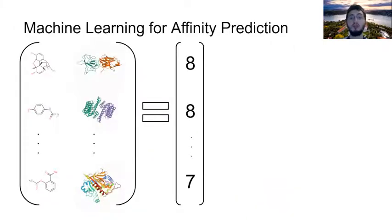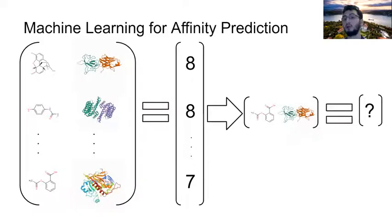More specifically, we can use machine learning for affinity prediction to ask the question we would like to ask. Given the list of compound and protein pairs with these affinity scores, what would be the affinity of this compound protein pair? With machine learning, we can ask this question very naturally.